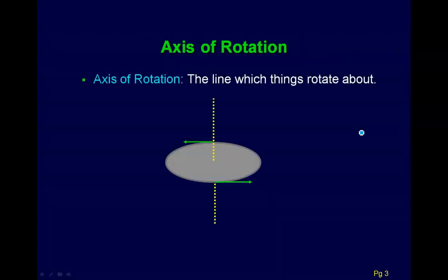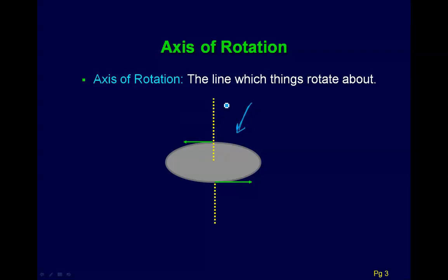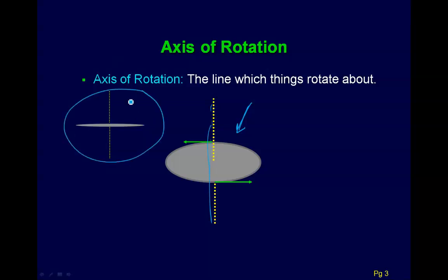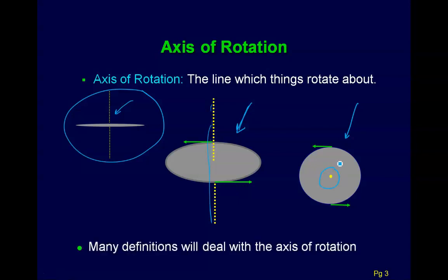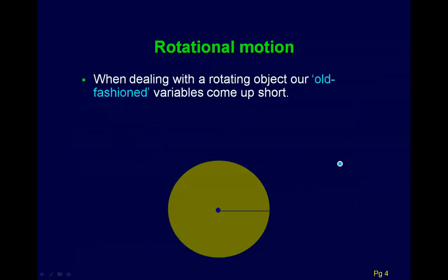A really important concept will be the axis of rotation, which is the line things rotate about. Basically everything we've talked about will be defined relative to the axis of rotation. Here's a gray disk rotating, and this yellow dotted line is the axis of rotation. We can view it head-on where the disk looks really skinny, or from a bird's-eye view where the axis is just a little dot. All of our definitions will deal with the axis of rotation.